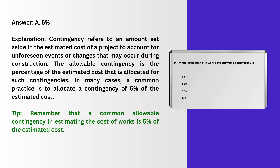Explanation: Contingency refers to an amount set aside in the estimated cost of a project to account for unforeseen events or changes that may occur during construction. The allowable contingency is the percentage of the estimated cost allocated for such contingencies. In many cases, a common practice is to allocate a contingency of 5% of the estimated cost. Tip: remember that a common allowable contingency in estimating the cost of works is 5% of the estimated cost.